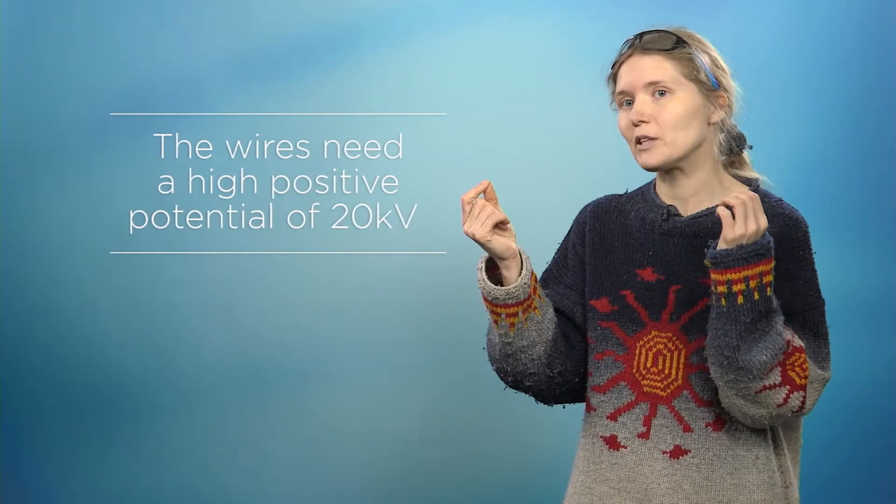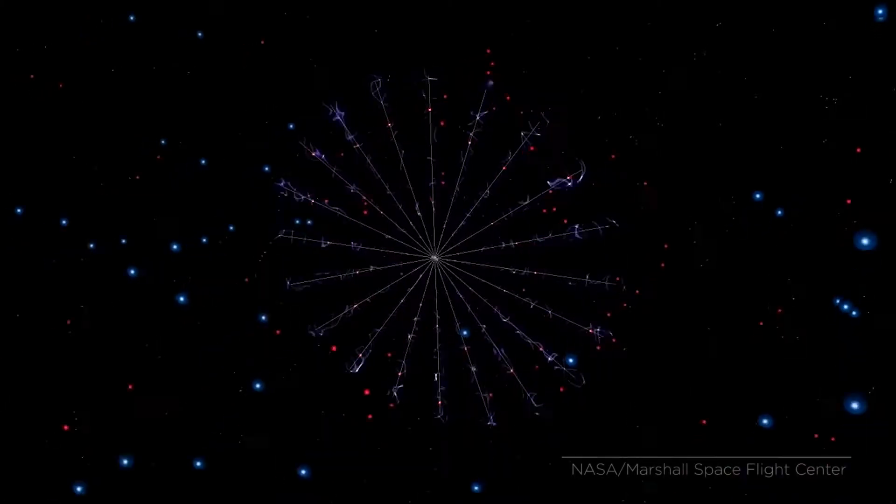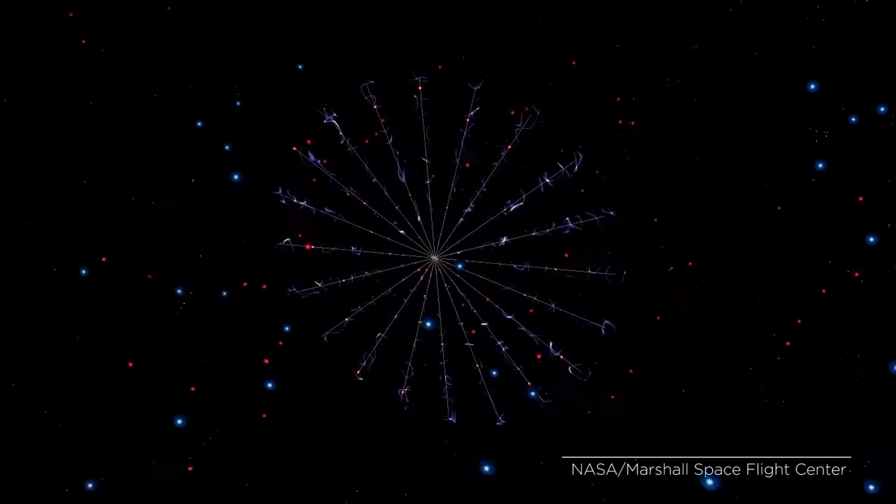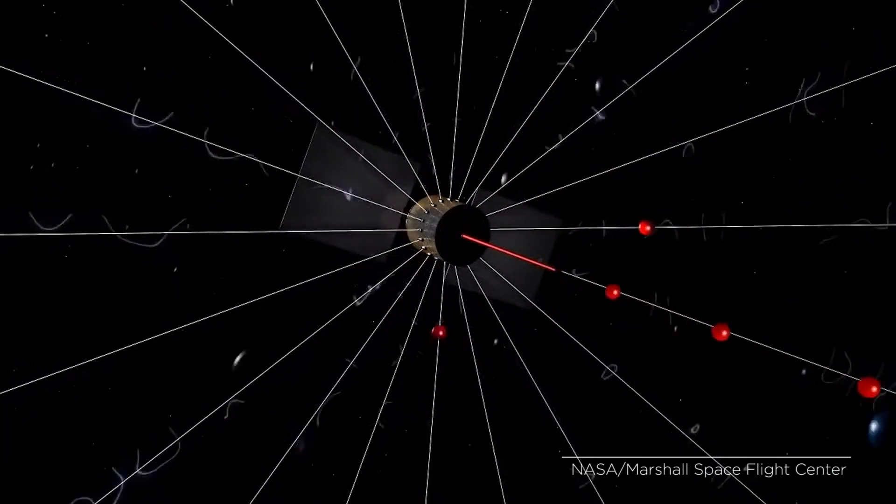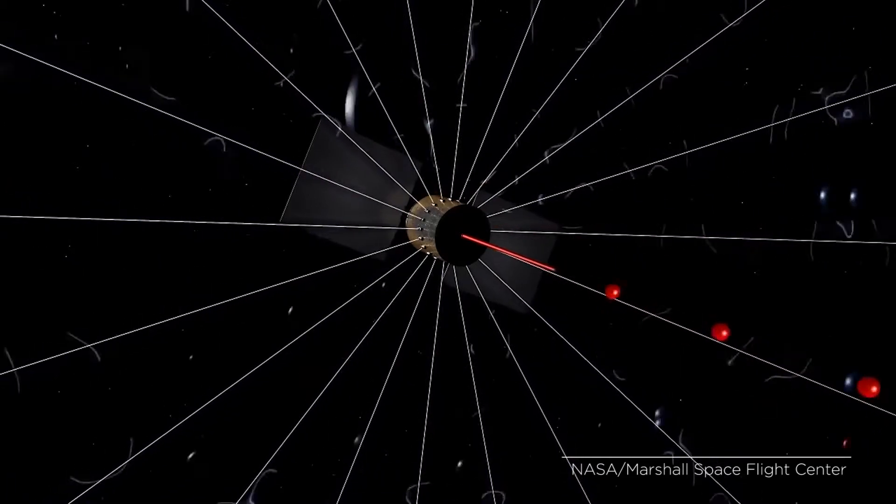We need to charge these wires to the very high voltage, maybe 20 kilovolts. It's pretty high. And we can acquire this with a simple technology, electron gun, where we just shoot electrons away from the spacecraft on this electric solar wind sail. And this way we can keep the wires charged.